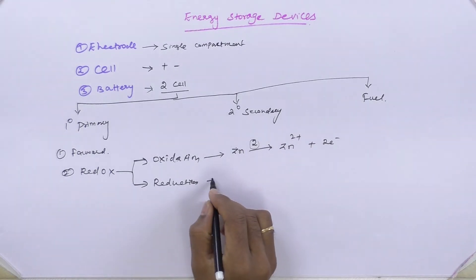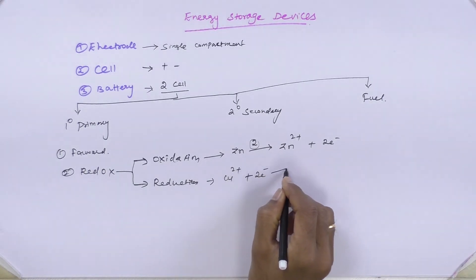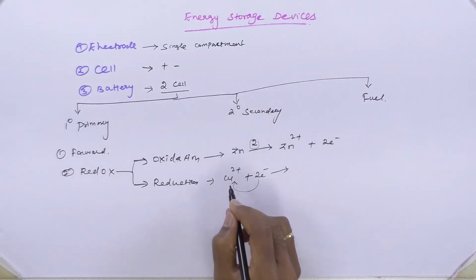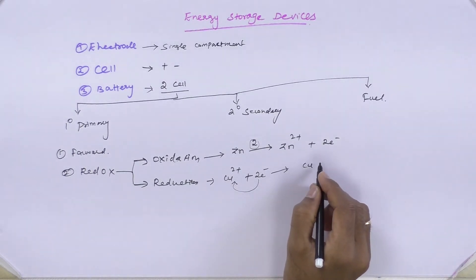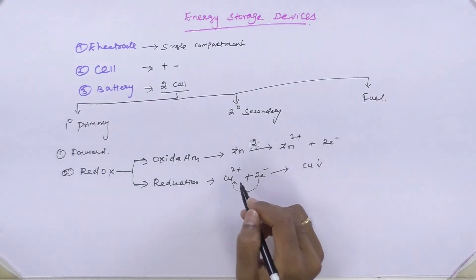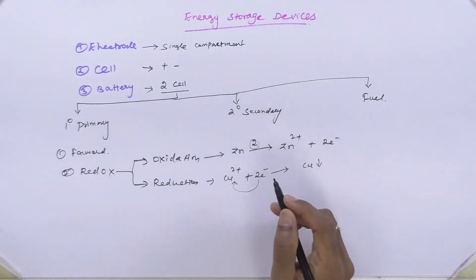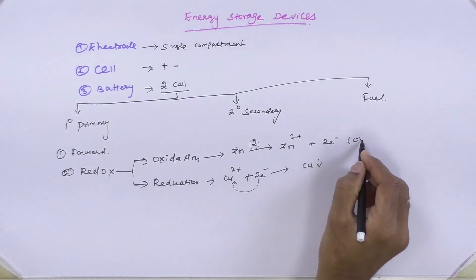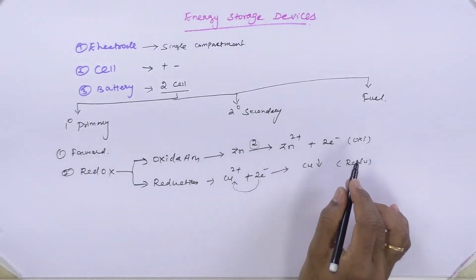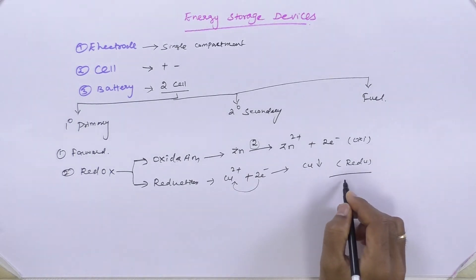Now what is reduction? Consider Cu²⁺ — it will try to consume electrons from an electron supplier. The 2 electrons will nullify the positive charge on the copper metal, so it gets reduced and becomes Cu, which is deposited. Why does zinc get oxidized and copper get reduced? Because when you look at the position of zinc in the electrochemical series, it is placed above hydrogen and copper is placed below hydrogen. So the tendency of zinc is always oxidation and the tendency of copper is always reduction. Therefore zinc always undergoes oxidation and copper always undergoes reduction. The combination of these two reactions is called a redox reaction.